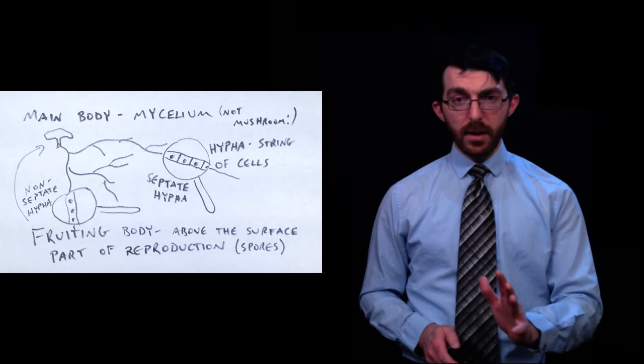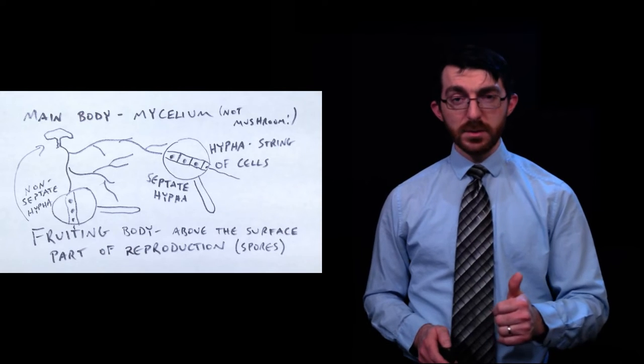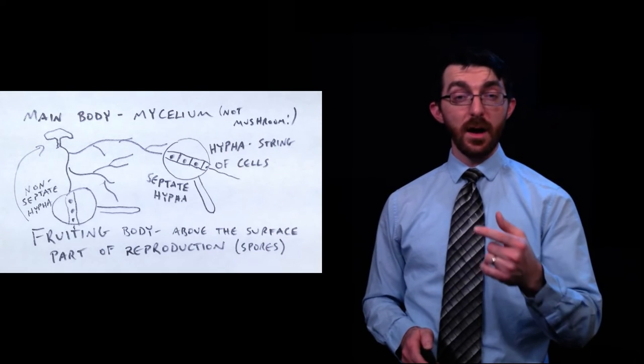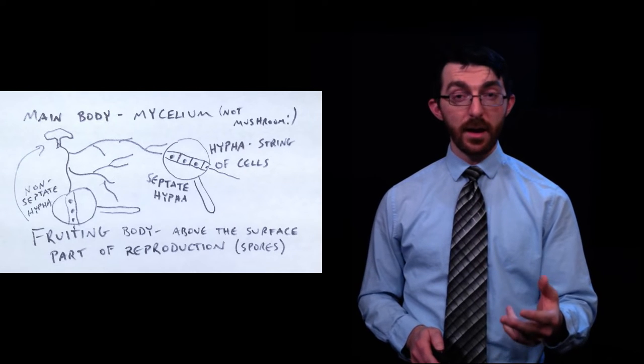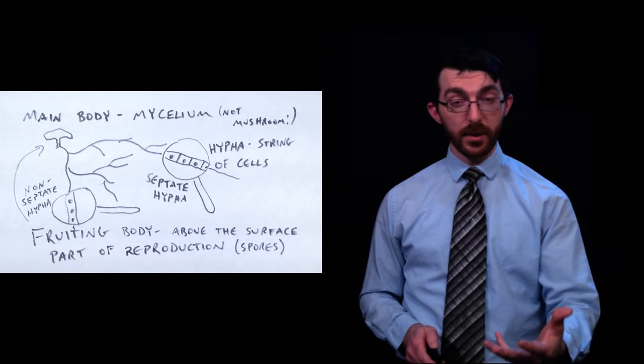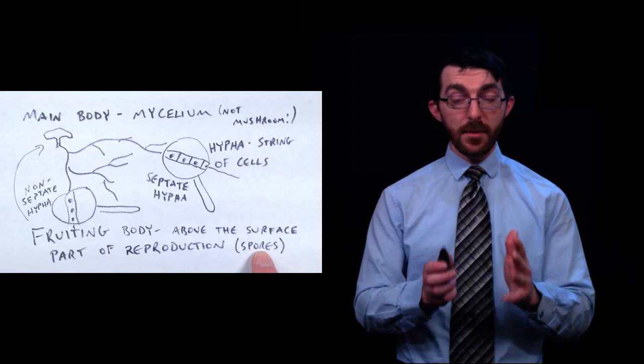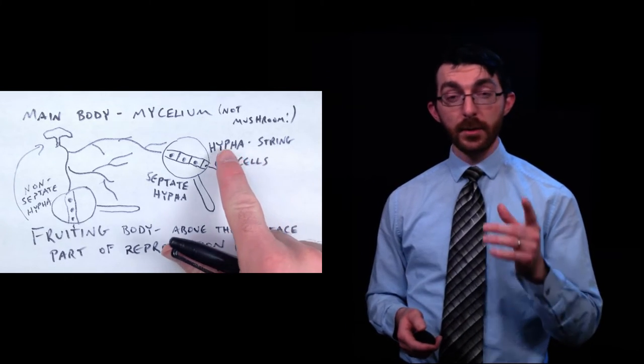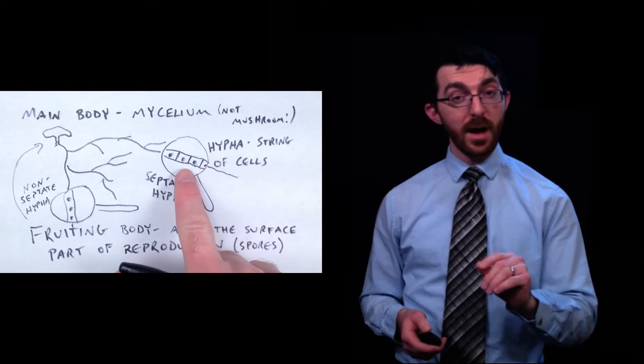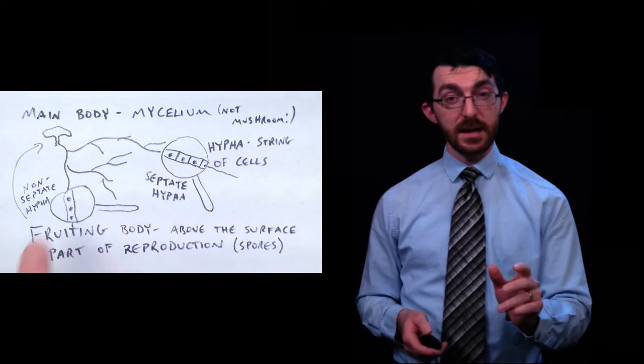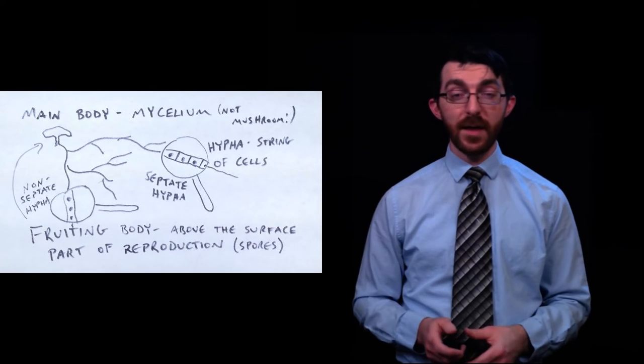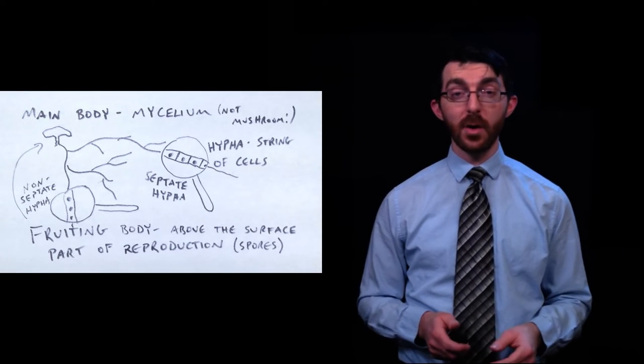Just to review, we've got a fungus whose main body is called mycelium, which produce fruiting bodies that contain their spores for reproduction. The mycelium, the main body, is made of long filaments of cells that are called hypha. Those hypha may either be septate or non-septate. If they are septate, then all the cells are separated by cell walls. And if they are non-septate, then they are joined together like one big long hallway.